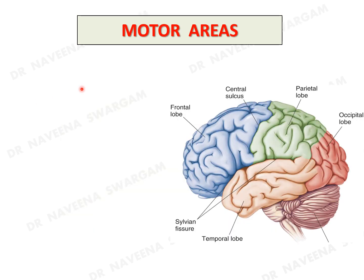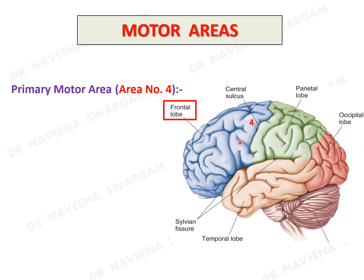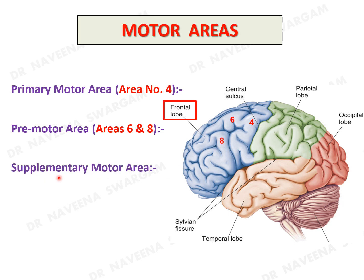Motor areas occupy the frontal lobe. They are further subdivided into primary motor area (area 4), premotor area (areas 6 and 8), supplementary motor area, and prefrontal area (areas 9, 10, 11, and 12).